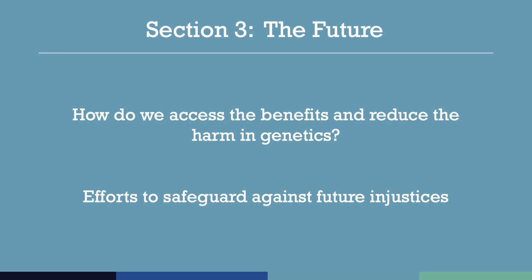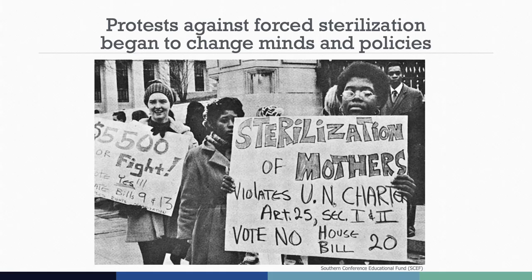In many cases, forced sterilizations only came to a halt through the activism and advocacy of the groups of people being targeted. Section 3 highlights the work of activists, policymakers, and scientists to bring awareness to the stories of those affected by eugenics practices and right the wrongs of the past, ushering in a new era of safeguards against future injustices. Protests against forced sterilization took place around the nation during the 1970s, including one in North Carolina. Though many individuals opposed the practice from the start, protests grew out of the civil rights and women's movements. Many states, including California, outlawed the practice in the mid to late 1970s.